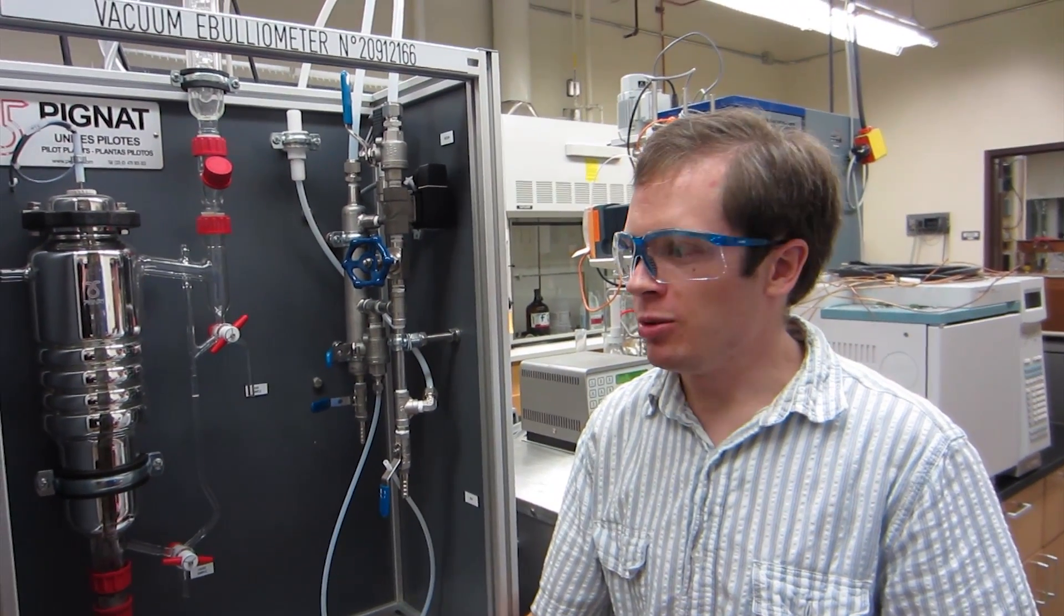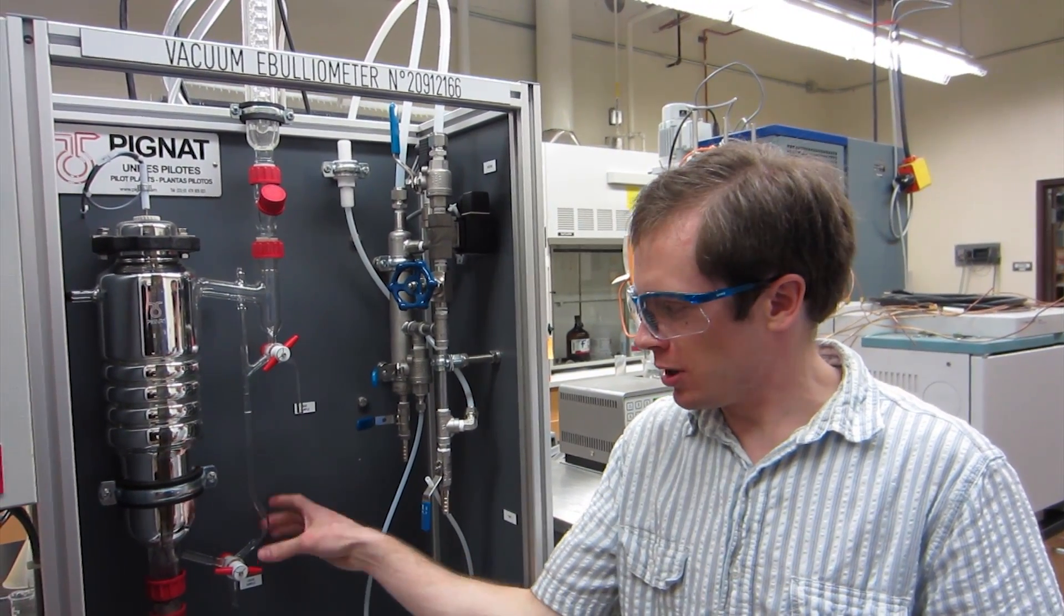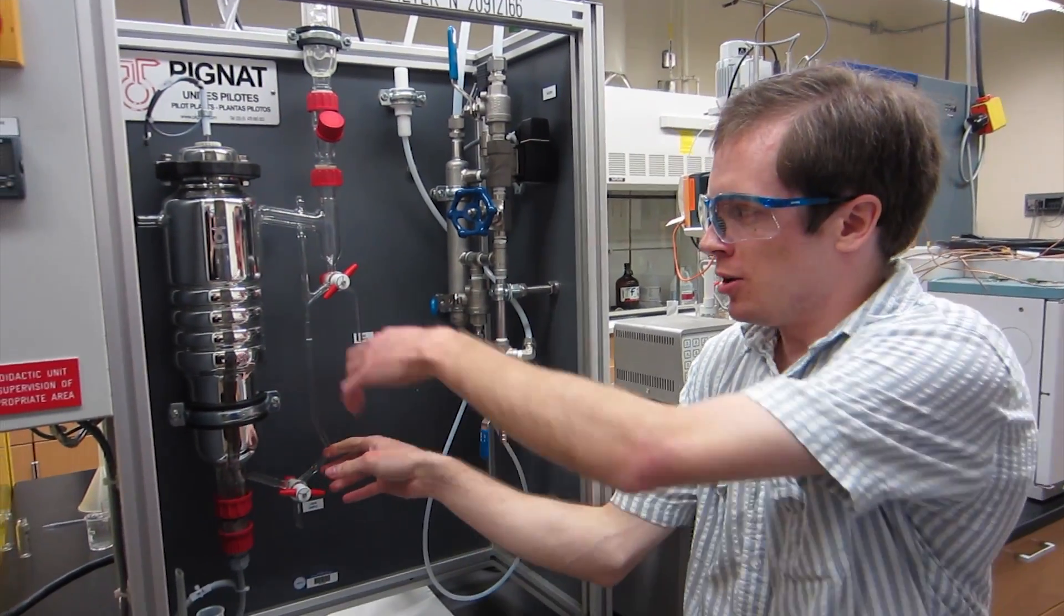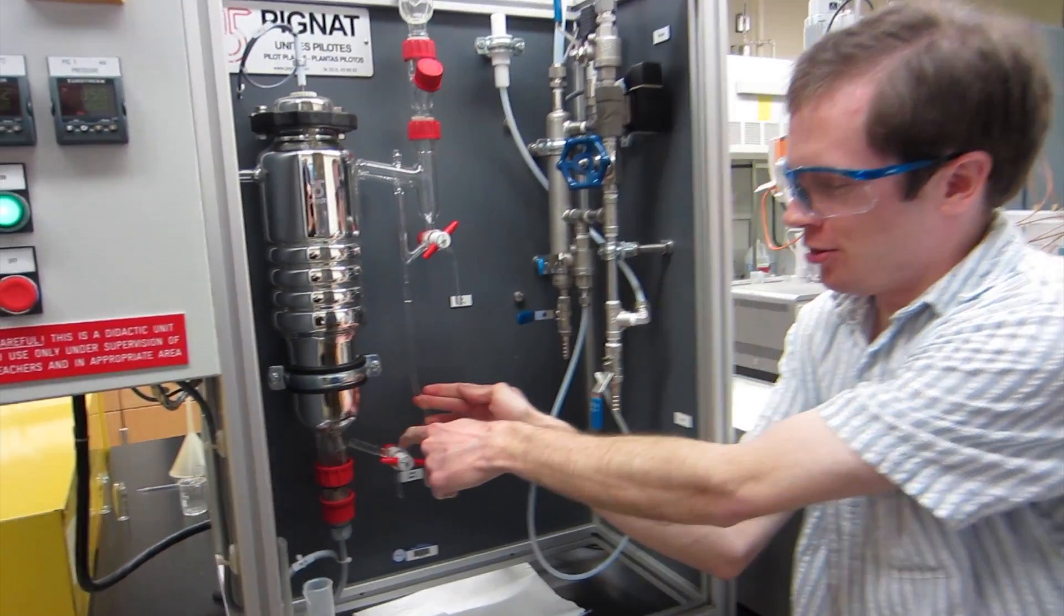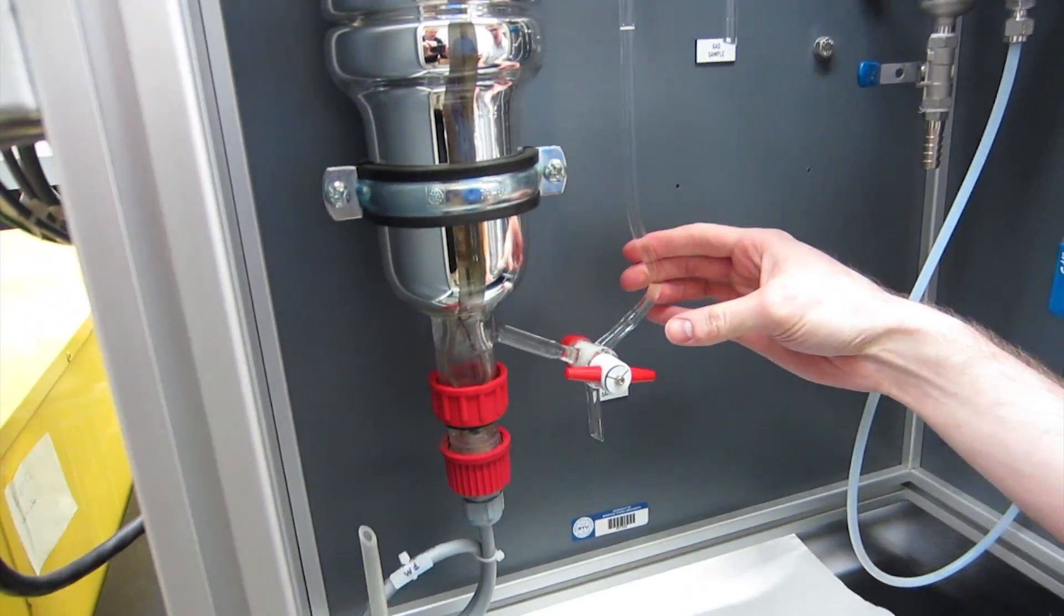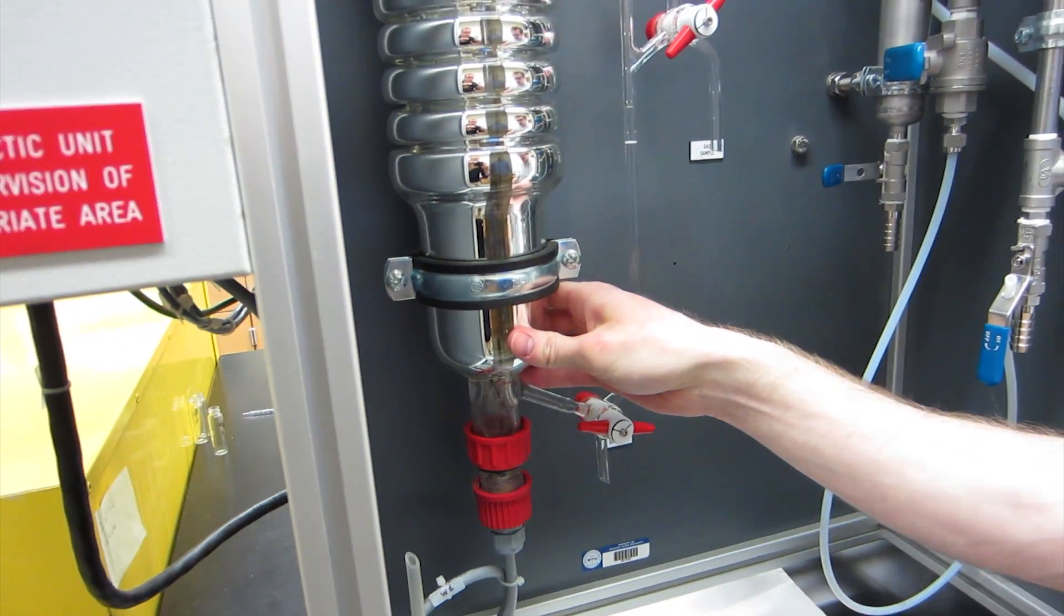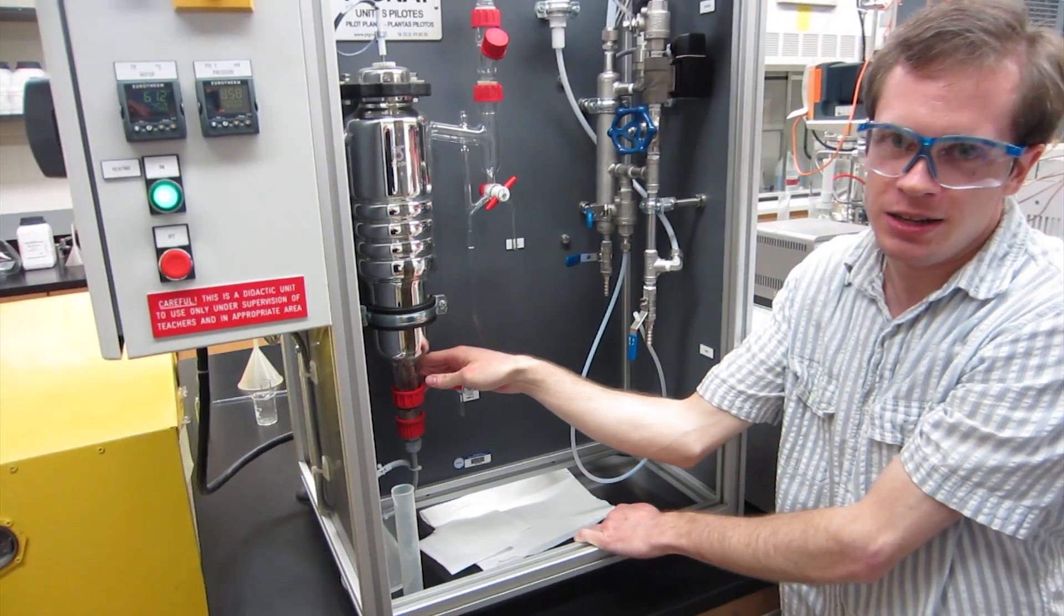So the biggest problem we tend to run into when running this thing is when we're collecting the liquid down here to try to get its composition. You notice that the distillate is coming down through right here and so if you're not careful you can end up getting some of the distillate in there contaminating your liquid.